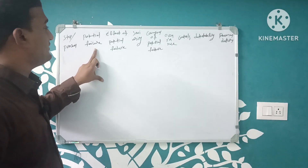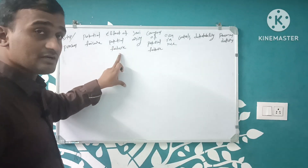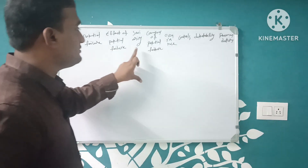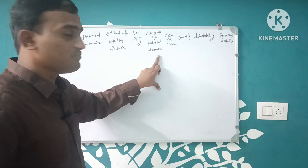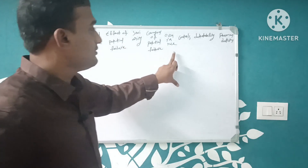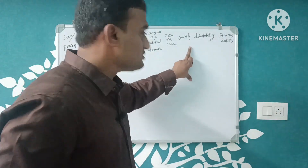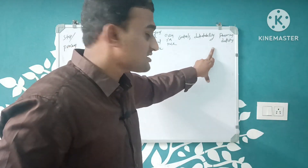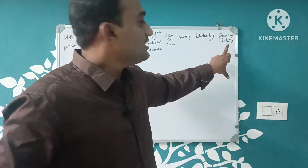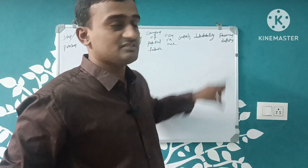To summarize the columns: Process, Potential Failure, Effect of Potential Failure, Severity, Cause of Potential Failure, Occurrence, Controls, Detectability, and Recommended Actions.